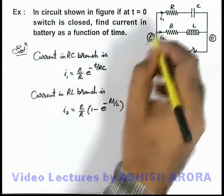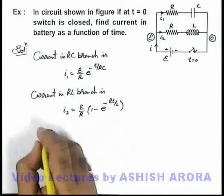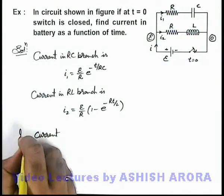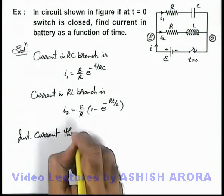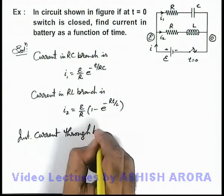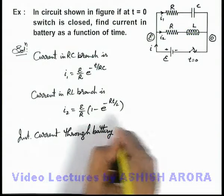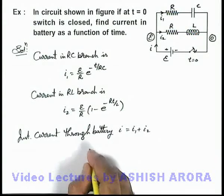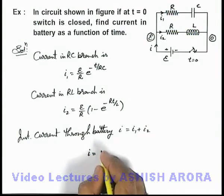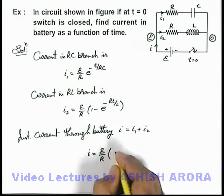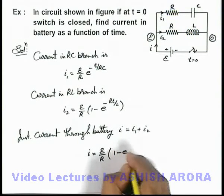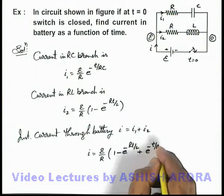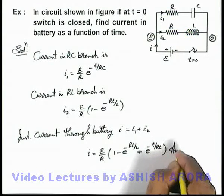So both of these currents are simultaneously flowing so we can directly write the instantaneous current through battery can be directly given as i equals i1 plus i2. So we can directly substitute the values. This will give us E by R we can take common, inside we are having 1 minus e to power minus Rt by L plus e to power minus t by RC. That'll be the answer to this problem.